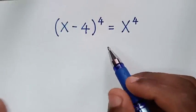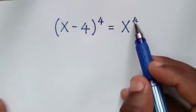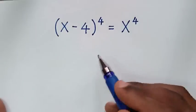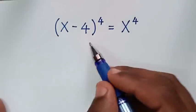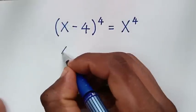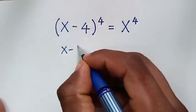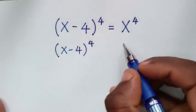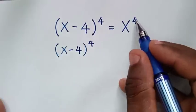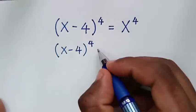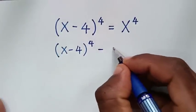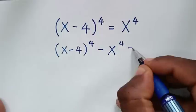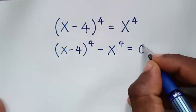In the first step, we will take this x to the power of 4 to the left side. So it will be (x minus 4) to the power of 4 minus x to the power of 4 is equal to 0.